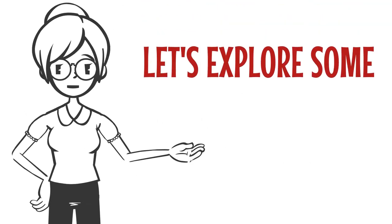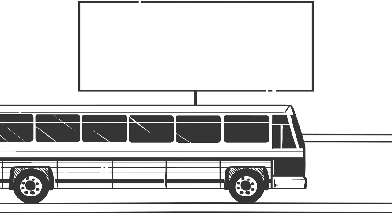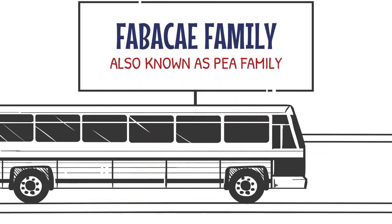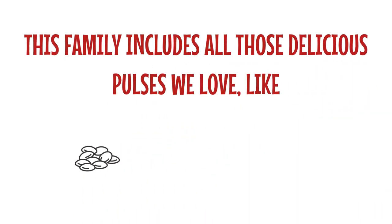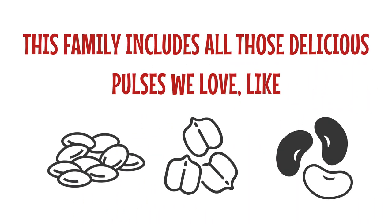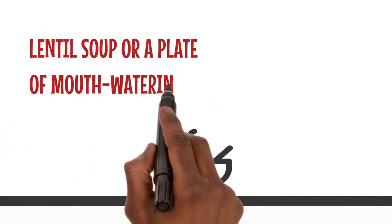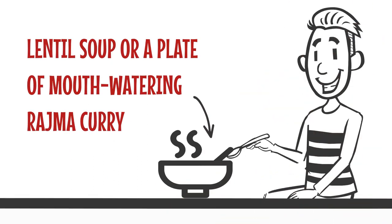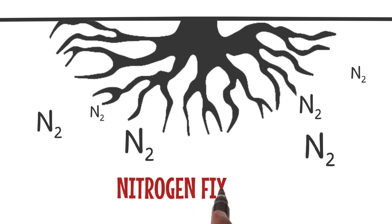Now, let's explore some fascinating plant families. Our first stop is the Fabaceae family, also known as the pea family. This family includes all those delicious pulses we love, like lentils, chickpeas, and beans. Imagine a hearty bowl of lentil soup or a plate of mouth-watering rajma curry. These plants not only satisfy our taste buds but also enrich the soil with nitrogen through a process called nitrogen fixation.